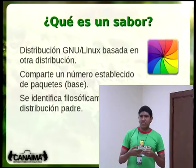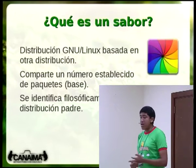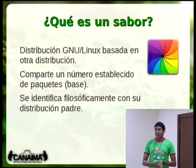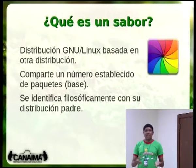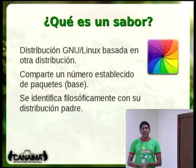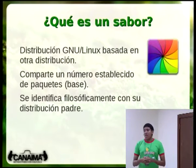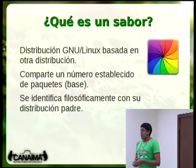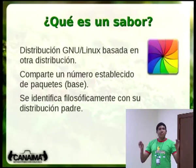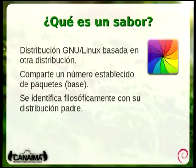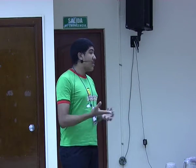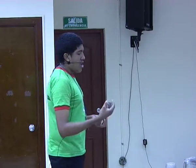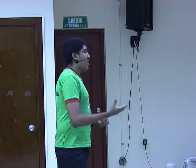¿Qué es un sabor, o Derivative Distribution, distribución derivada? Es una distribución que se hace a partir de otra distribución que permita hacer esa derivación. Como sabemos, Debian es un sistema operativo universal y perfectamente se pueden hacer distribuciones basadas en Debian, como Ubuntu o Canaima. Comparte un número preestablecido de paquetes con todas sus distribuciones derivadas —la base del sistema operativo— y normalmente se identifica filosóficamente con su distribución padre, promoviendo la difusión del conocimiento libre.